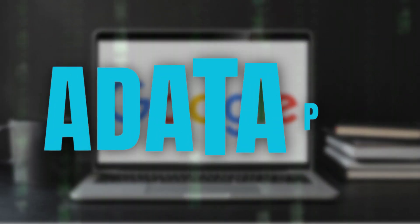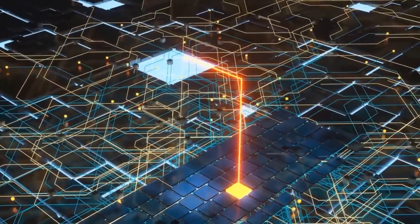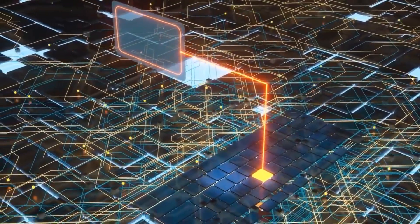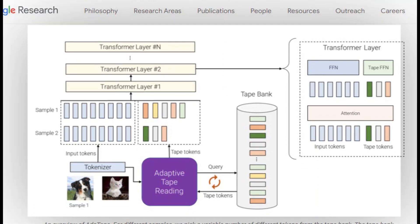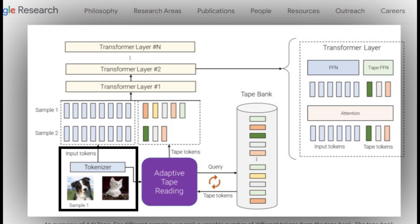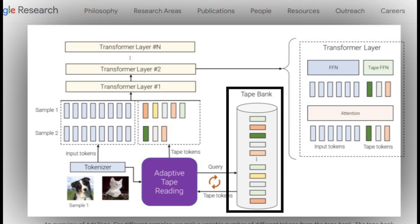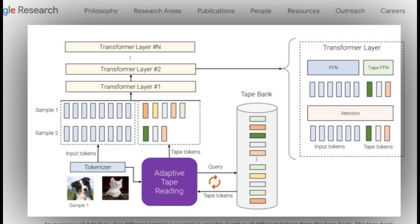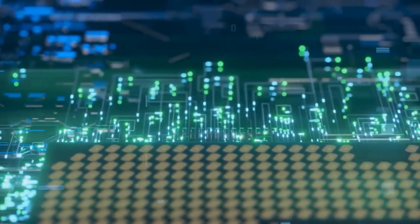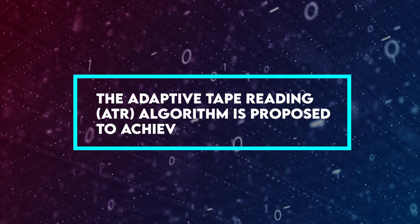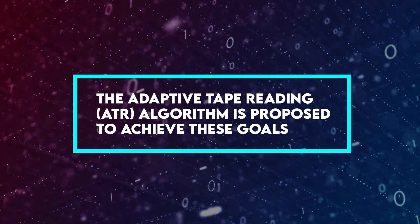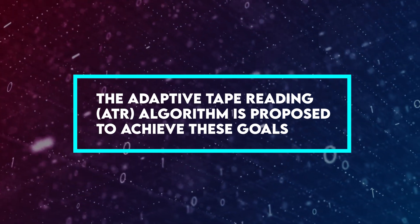Google states that Adatape uses an elastic input sequence that includes a dynamic read and write tape. This architecture adapts to generate input sequences by using tape tokens from a tape bank, which can either be trainable or derived from input data. The challenges and requirements for obtaining dynamic sequence content and length are explored, and the Adaptive Tape Reading algorithm is proposed to achieve these goals.